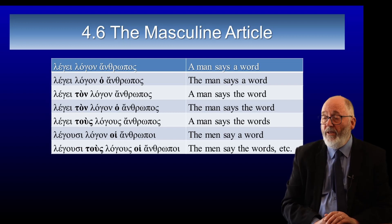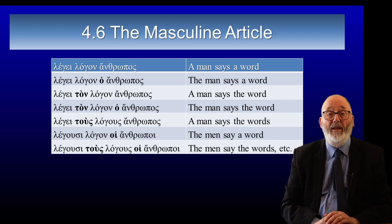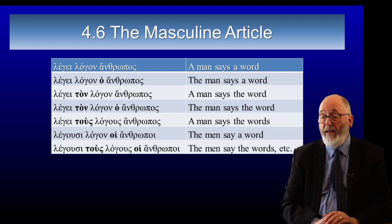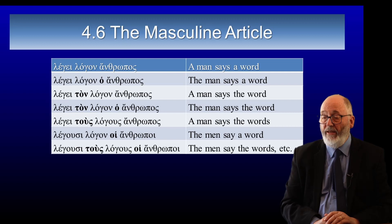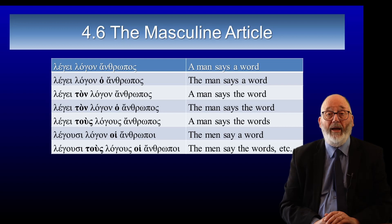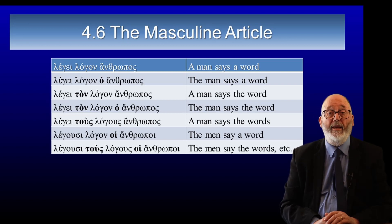With the article we get more options: legei ton logon anthropos — a man says the word; legei ton logon ho anthropos — the man says the word; legousin ton logon hoi anthropoi — the men say a word; legousin tous logous hoi anthropoi — the men say the words. You'll notice the definite article has the same number and case as the noun it is associated with.